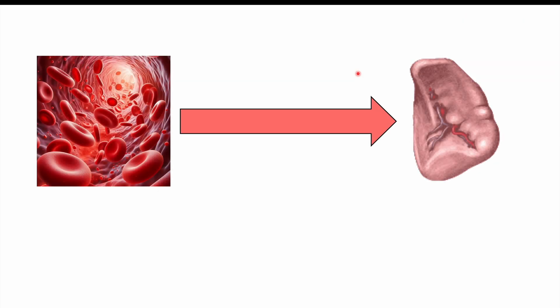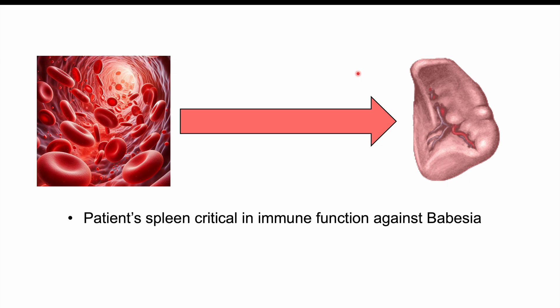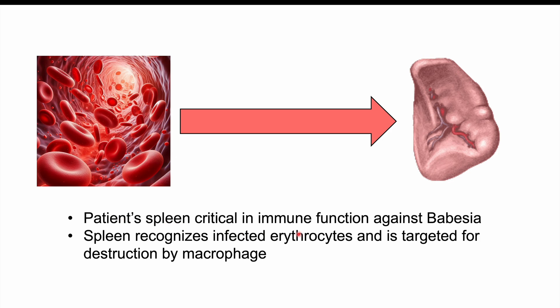The spleen is critical in immune function against Babesia. The reticuloendothelial system within the spleen recognizes infected erythrocytes and targets them for destruction by macrophages. This is why Babesia infections are more likely to occur in patients with splenic issues — asplenia, splenic dysfunction, or hepatosplenomegaly. Patients with poor immune functioning in general, such as the very old, very young, or those with severe diabetes, are also at increased risk.